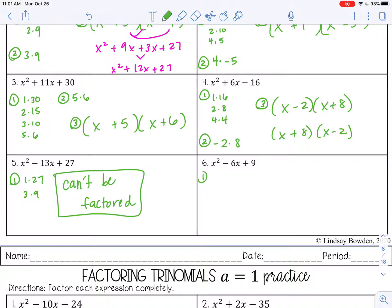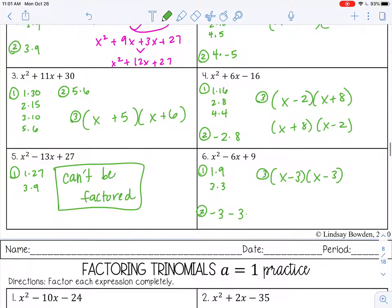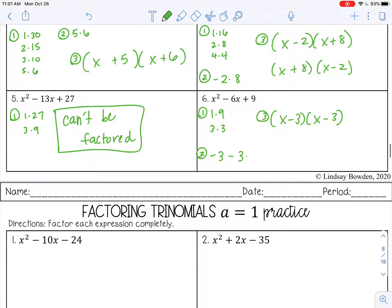And then number 6. Let's see factors of 9, 1 and 9, 3 and 3. Which one is going to give me negative 6? What if I did negative 3 minus 3? That will give me negative 6. Negative 3 times negative 3. That gives me my positive 9. So those are going to work. x minus 3 and x minus 3. And because you have the same binomial times itself, you can actually write this as a binomial square. So that would be your final answer.